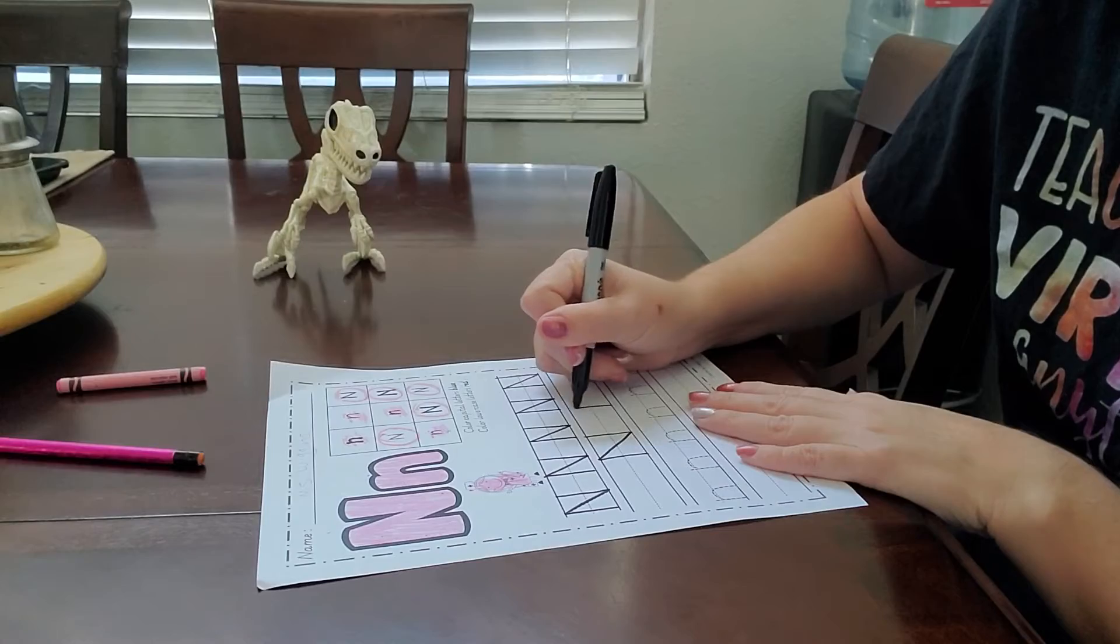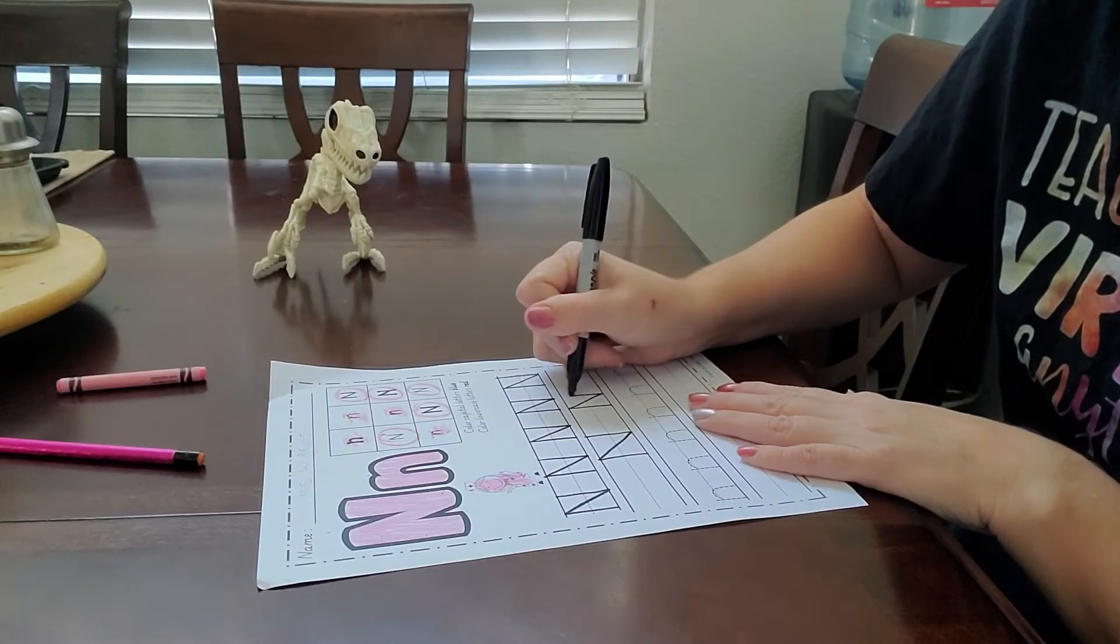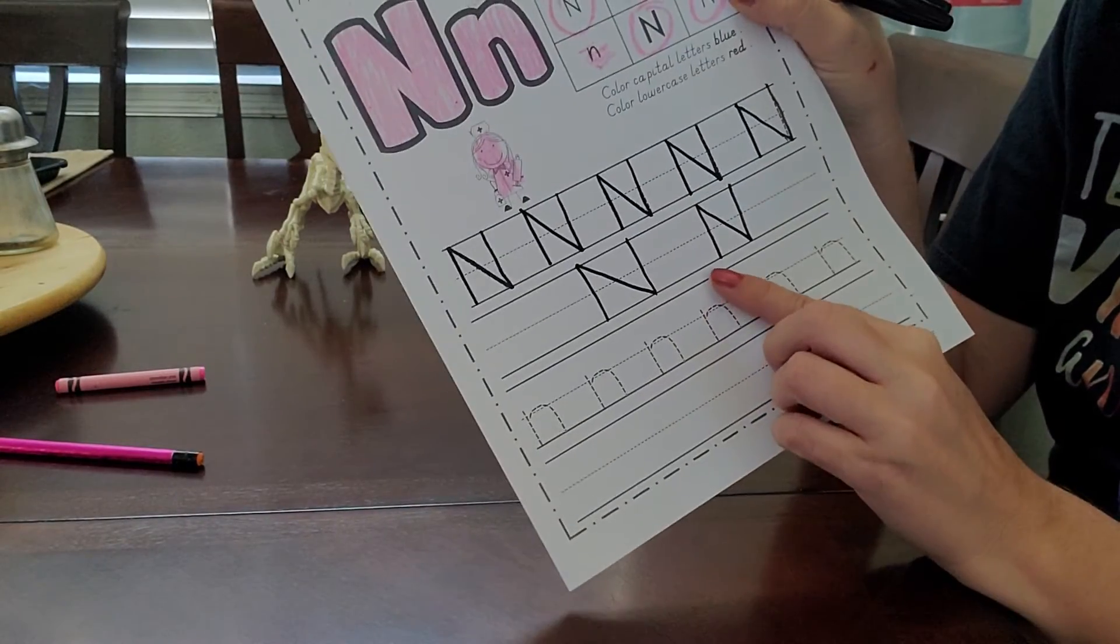And then a straight line back up. All right. Make one more. There we go. Now we have our two Ns.